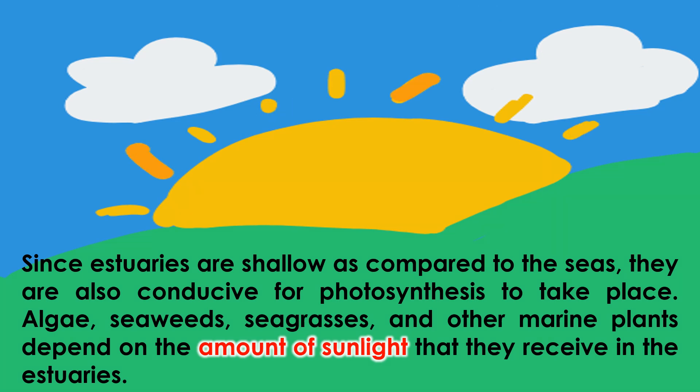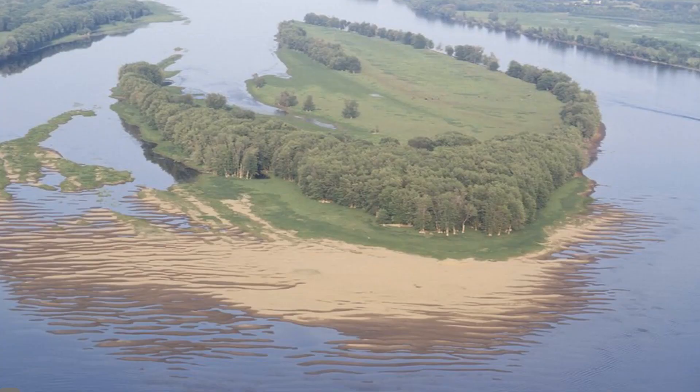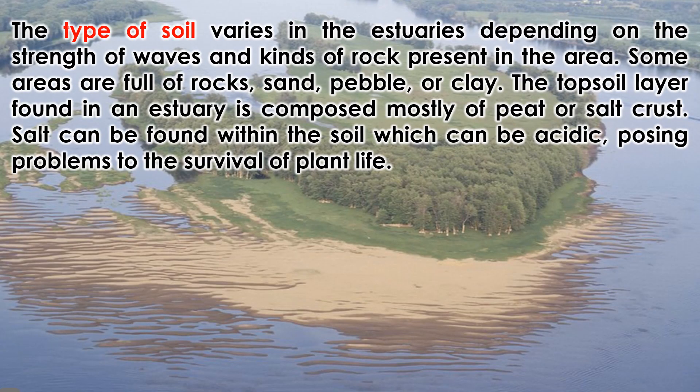Algae, seaweeds, seagrasses, and other marine plants depend on the amount of sunlight they receive in the estuaries. The type of soil varies in the estuaries, depending on the strength of waves and kinds of rock present in the area. Some areas are full of rocks, sand, pebble, or clay. The topsoil layer found in estuaries is composed mostly of peat or salt crust. Salt can be found within the soil, which can be acidic, posing problems to the survival of plant life.